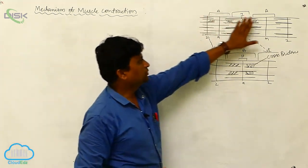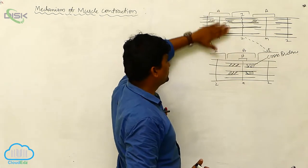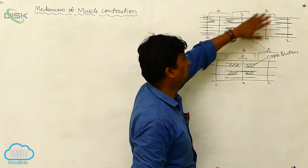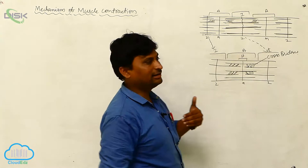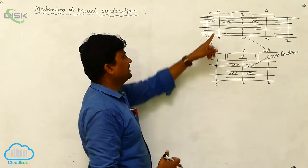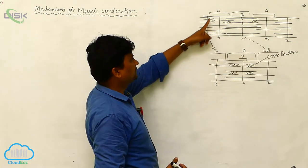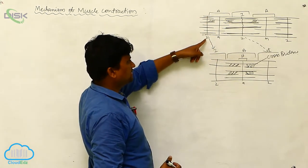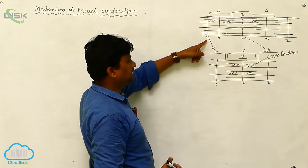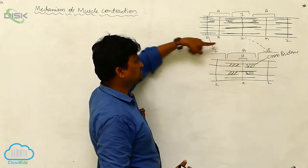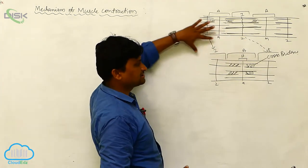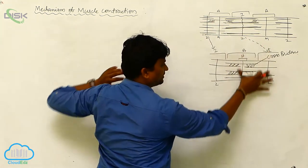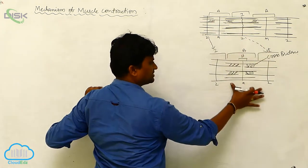This is a normal muscle fiber with A zone, I zone — alternate bands will be there. The A zone consists of the M line, and the I zone consists of a Z line. Two successive Z lines define what we consider as a sarcomere.